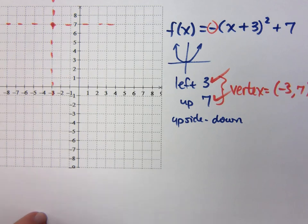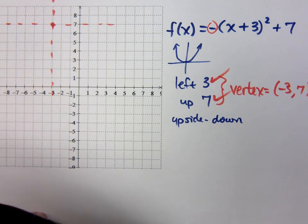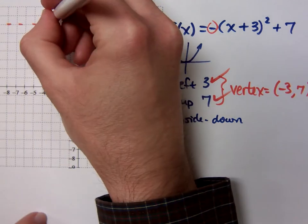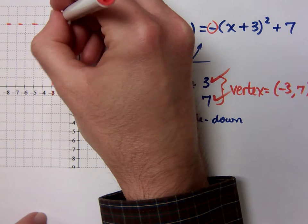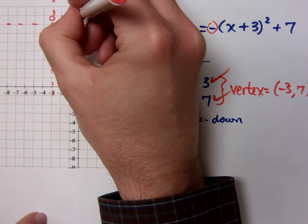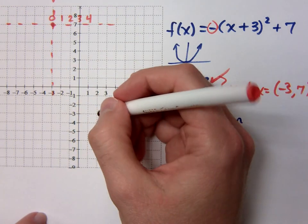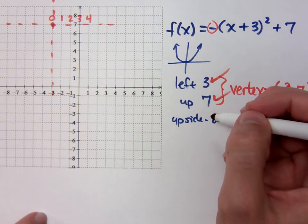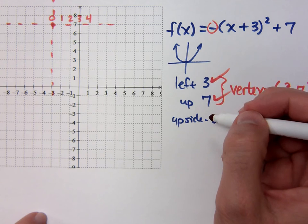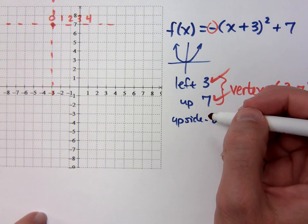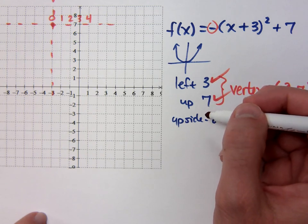Do you know the shape for this squaring function? Then use those points. This is your new 0, this is 1, 2, 3, 4, and so on. Since you're opening down, once I square those numbers because it's the squaring function, I'm going to be going down.